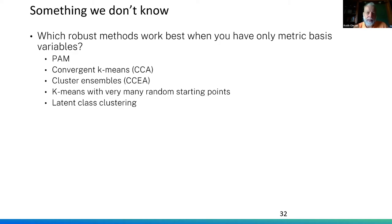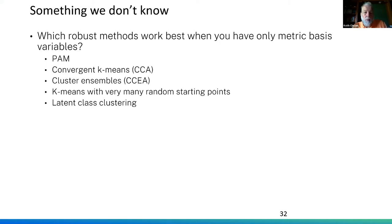The five methods we chose to look at are: partitioning around medoids (PAM), convergent k-means, and cluster ensembles — both available in Sawtooth Software's CCEA package — plus a robust version of k-means in R using a thousand random starting points, and model-based clustering (a particular type of latent class also available in R). With those five methods, we created artificial data sets where we knew segment membership, to evaluate each method's performance.